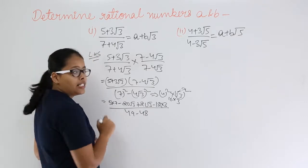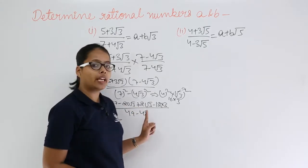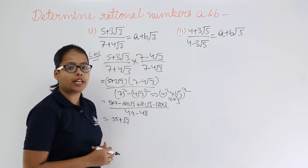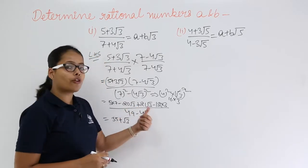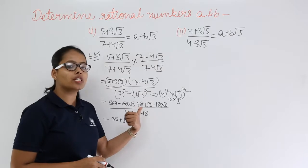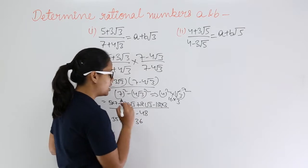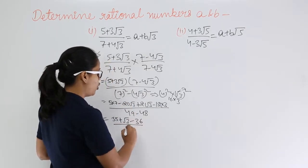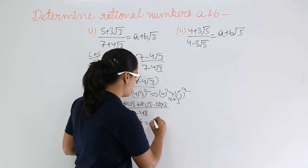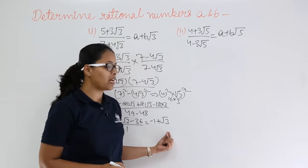Now solve this further. 7 fives are 35. In the numerator: −20√3 + 21√3 gives +1·√3, since 21 minus 20 is 1 and the greater value is positive. Then 12 times 3 is 36. In the denominator 49 − 48 gives 1. So 35 − 36 = −1, giving the result −1 + √3. After simplification you are getting −1 + √3.